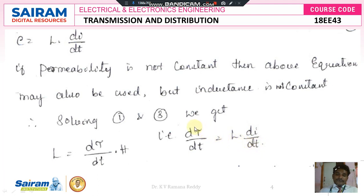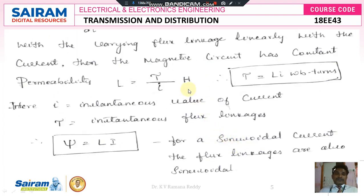Flux linkage with respect to time is equal to the amount of inductance offered in that conductor multiplied by current changes with respect to time. Therefore dψ by dt is equal to capital L into di by dt. With varying flux linkage, there exists an induced EMF. Flux linkage takes place from one conductor to another conductor in the transmission system. When the varying flux linkage varies linearly with the current, the magnetic circuit has a constant permeability. As we know, the formula LI is equal to Nφ.